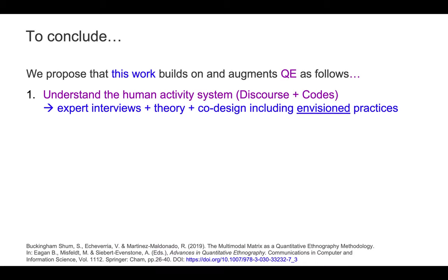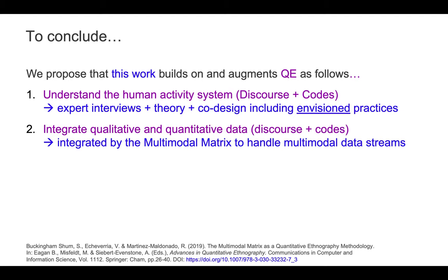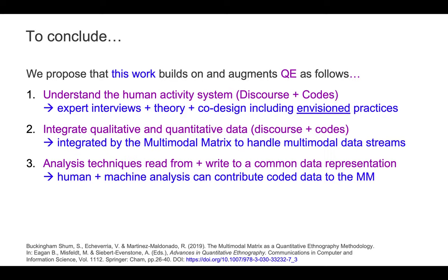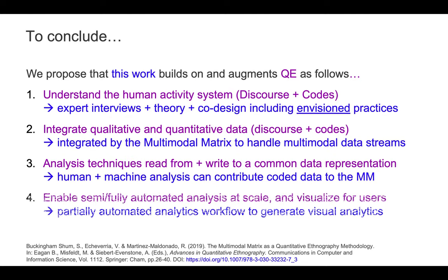To conclude, we think this work is building on and augmenting QE as follows. We need to understand human activity systems — the big D discourse, big C codes — and we've used an array of techniques to give insight into both current and envisioned practices. We need to integrate qualitative and quantitative data — small d and small c discourse and codes — and the multimodal matrix gives us a way to handle that heterogeneous data. We need analysis techniques that can both read from and write to a common data representation, and we have demonstrated how that can be done. Finally, we need to be able to partially or fully automate analysis at scale when dealing with large datasets, and visualize this for users to make it useful. We have illustrated how far we've got so far in our work around co-located teamwork analytics. Thanks very much indeed.